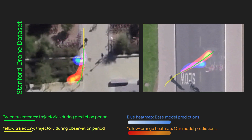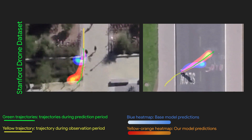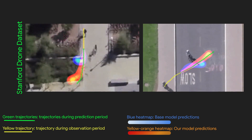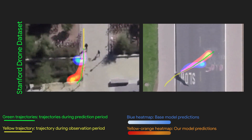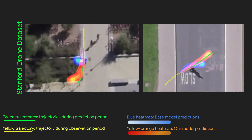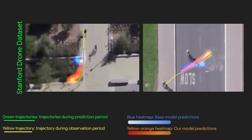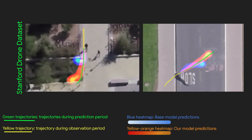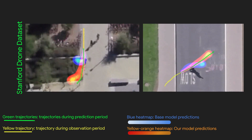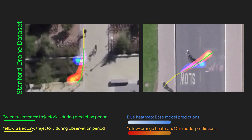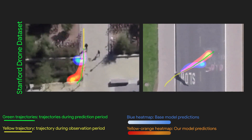Here are baseline comparisons. The blue heat map shows baseline model predictions and the yellow-orange shows our model predictions. The green trajectory is the ground-truth trajectory during the prediction period. As you can see, our model correctly predicts the turns as well as the length of the future trajectories.